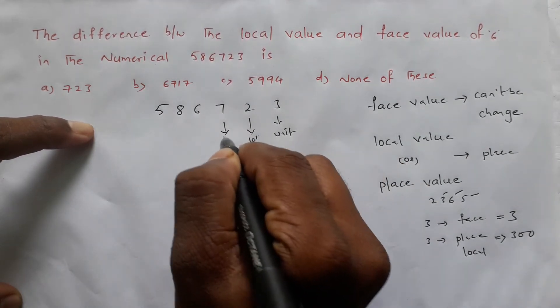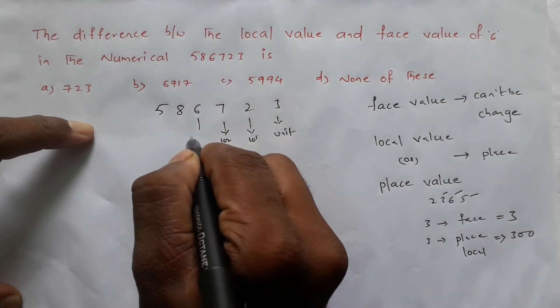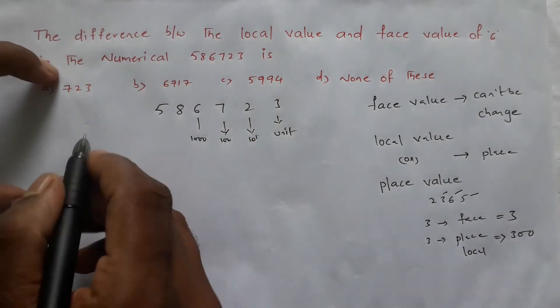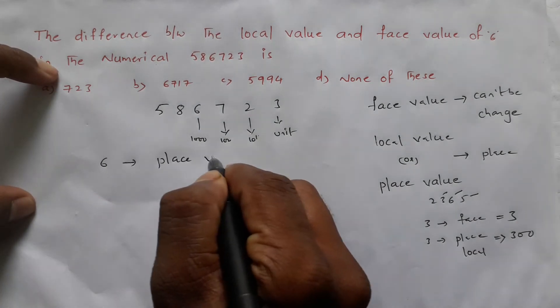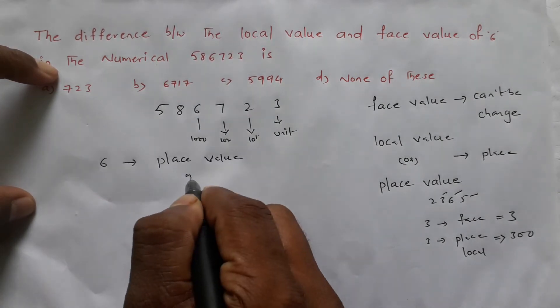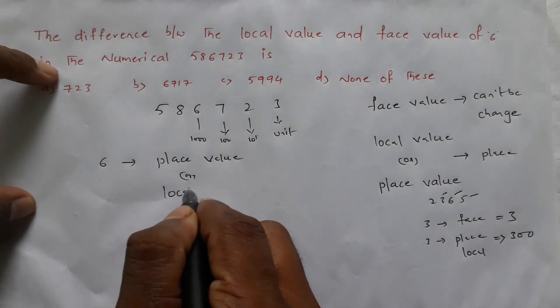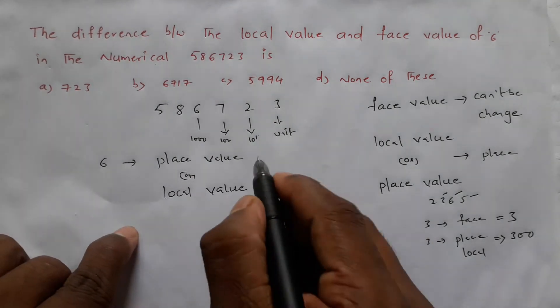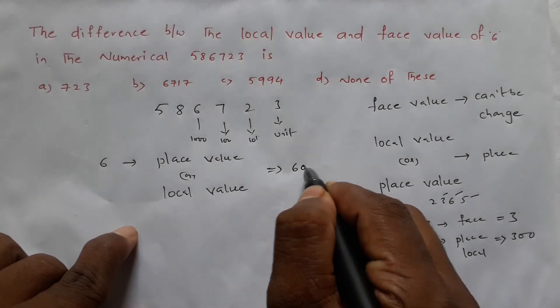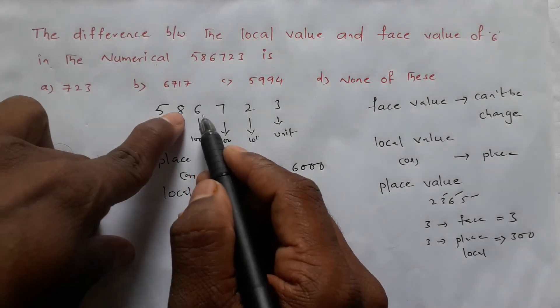Six's place value - the local value. Six's place value or local value is equal to how much? Six thousand, because 6 is in the thousands place.